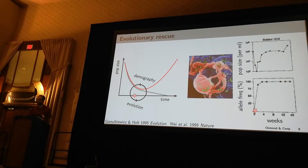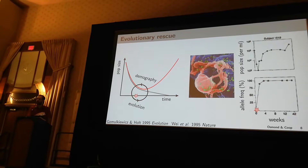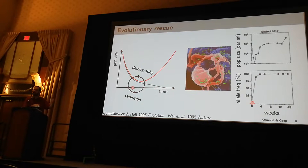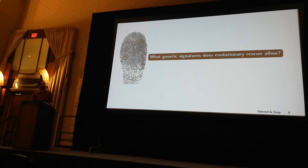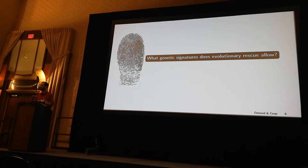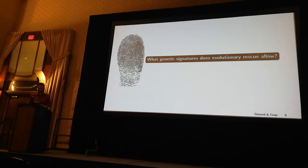What I find especially interesting about this process is that there's an intricate feedback between demography and evolution, where the sweep affects the bottleneck and the bottleneck affects the sweep. And what I want to do today is ask: what are the genetic signatures that this feedback between demography and evolution leaves in the case of evolutionary rescue?